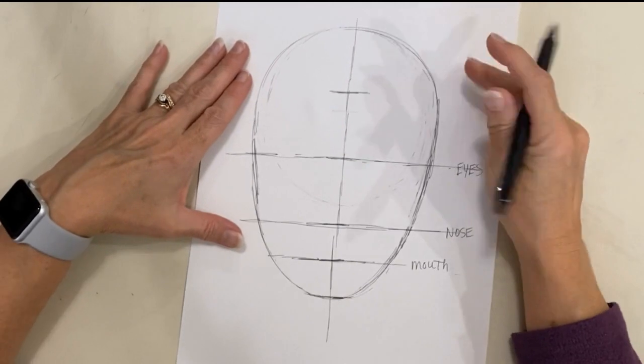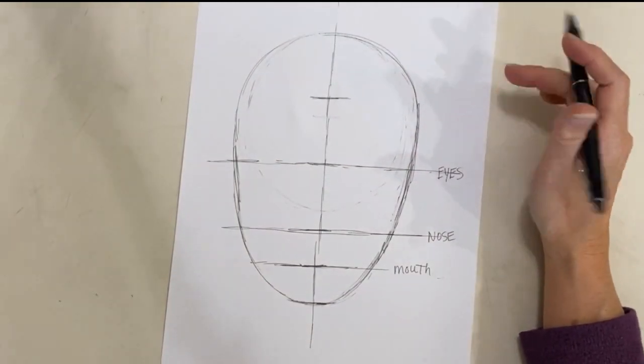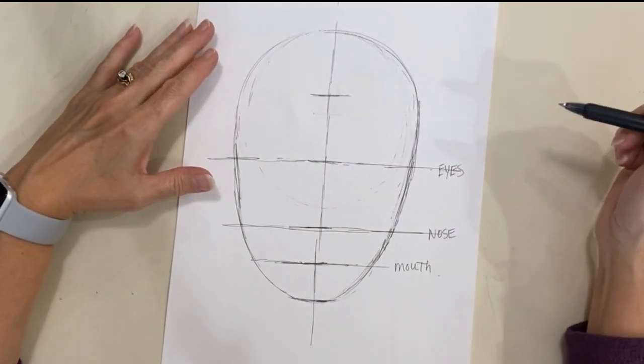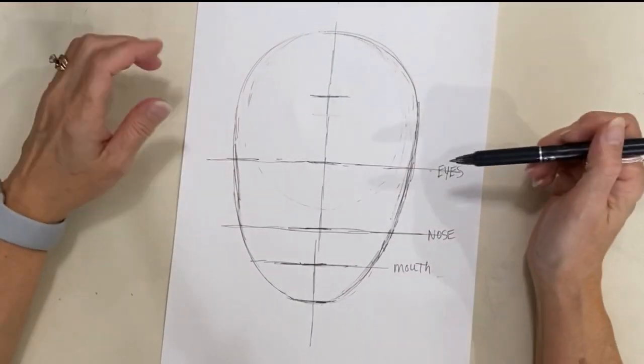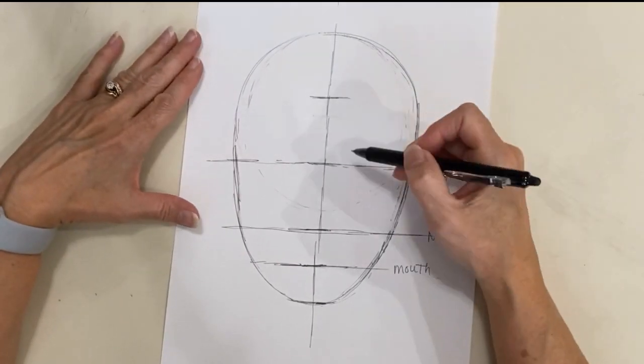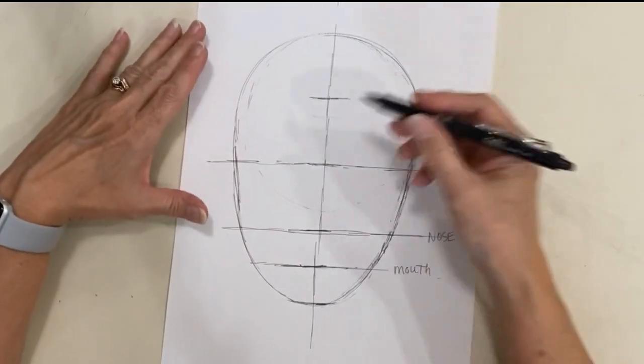Okay, now you're going to start with your eyes always, because your eyes determine where everything else on your face is located. So the first thing that I'm going to do is I'm going to mark the space between my two eyes.